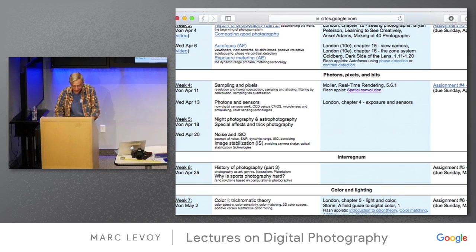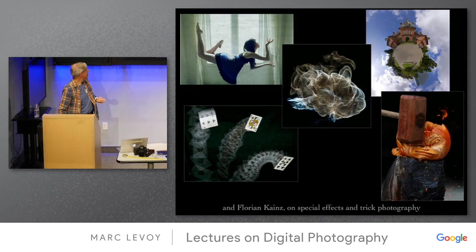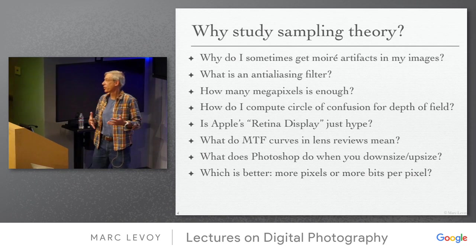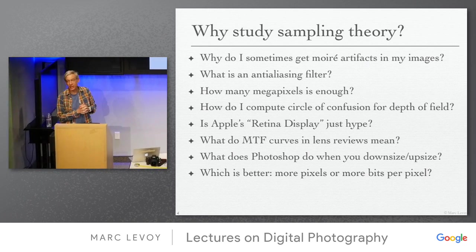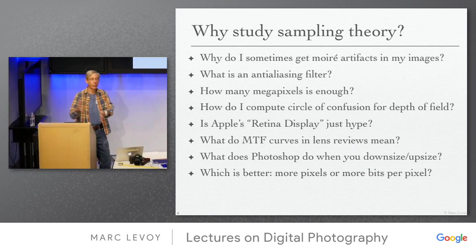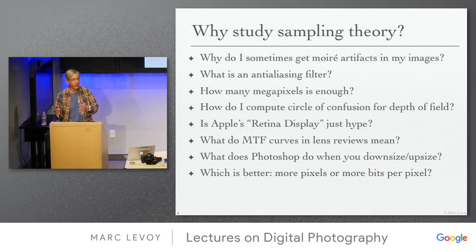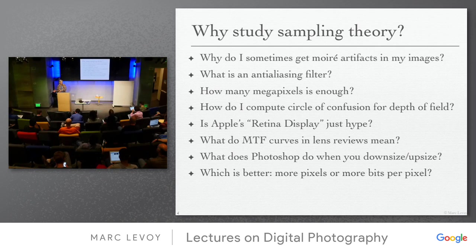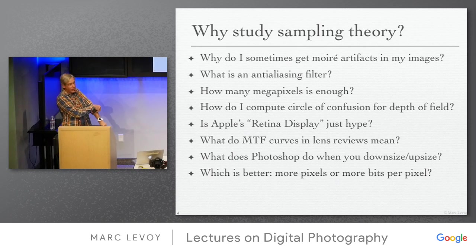Nothing is canceled, just a little shift. Today we're going to talk about sampling theory. Throughout the course there's an alternation between theory and applications in photography. Today we'll talk about sampling theory and a little about how it affects photography, and on Wednesday we'll talk about sensors and anti-aliasing filters. We'll do this several more times — for example, when we talk about color theory and color gamut mapping.